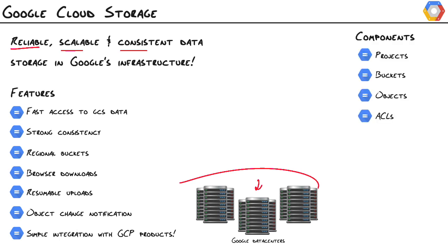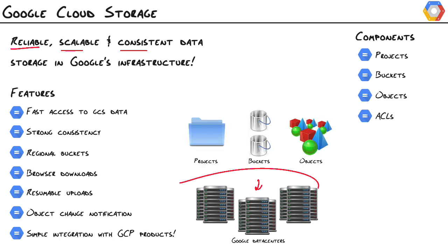Let's talk about the components. We have projects, buckets, objects, and access control lists. Essentially, a project contains buckets and a bucket contains objects. ACLs are the mechanism we use to control access to our buckets and objects. Buckets and objects have independent access control lists. An access control list really just contains two things: scope and permission. Scope refers to the users and groups that have access to these objects. Permission is the kind of actions they can perform — read, write, full control.